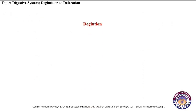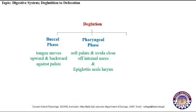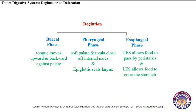Deglutition refers to the swallowing of food and can be divided into three phases. The buccal phase, which is voluntary in action — the tongue moves upward and backward against the palate. The pharyngeal phase, which is involuntary — the soft palate and uvula close off internal nares and the epiglottis seals the larynx. The esophageal phase, also involuntary — the upper esophageal sphincter opens to allow food to pass by peristalsis, and the lower esophageal sphincter opens to allow food to enter the stomach.